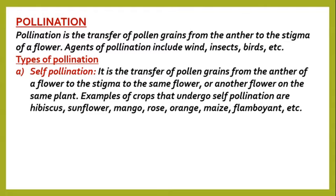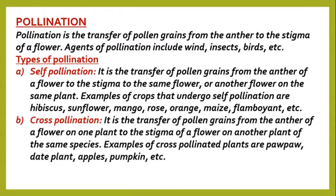Now let's look at cross-pollination. Cross-pollination is the transfer of pollen grains from the anther of a flower on one plant to the stigma of a flower on another plant of the same kind or species. Here we are referring to two different plants — one is a male plant and the other is a female plant.